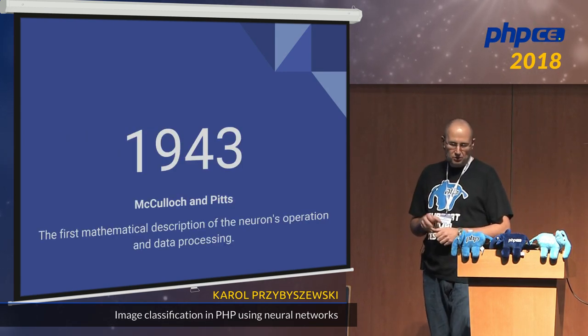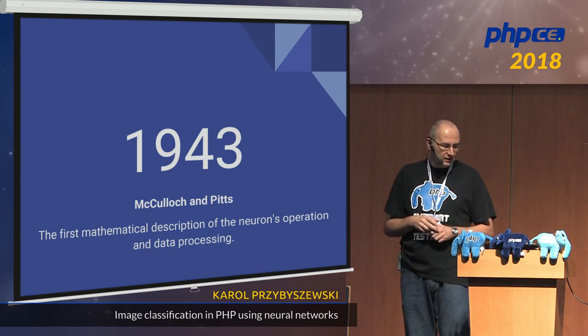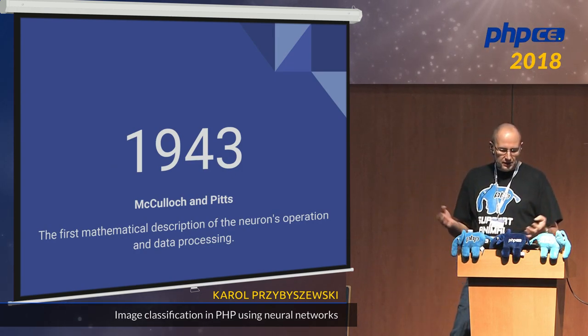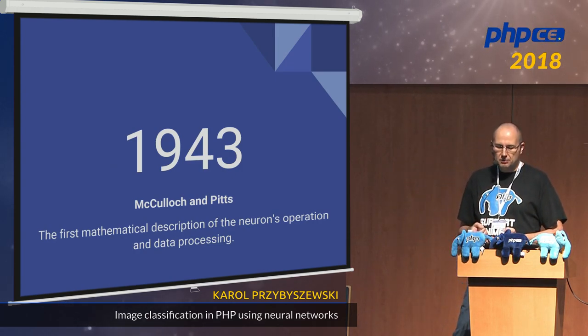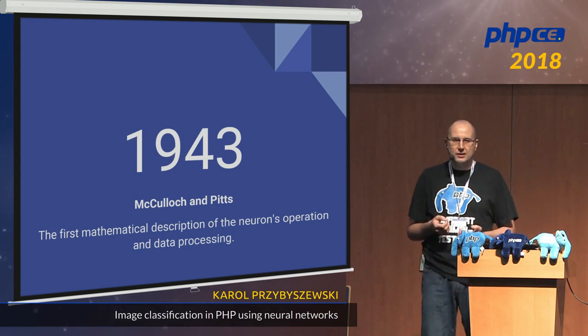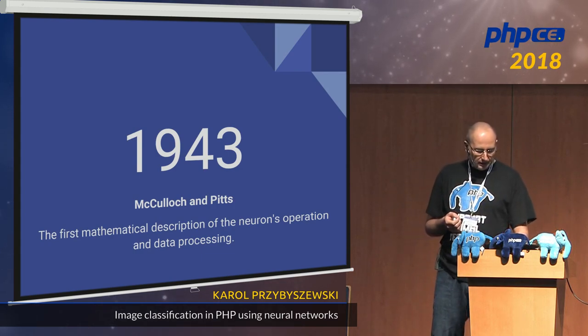It was during the Second World War. Two guys, McCulloch and Pitts, provided the first mathematical description of the neurons' operations and data processing.